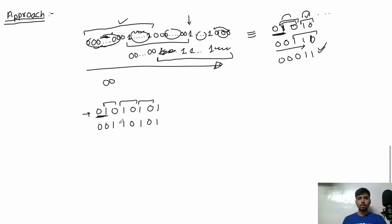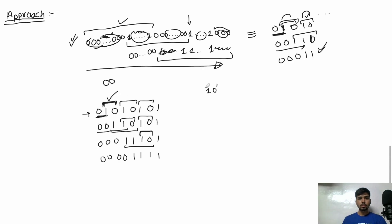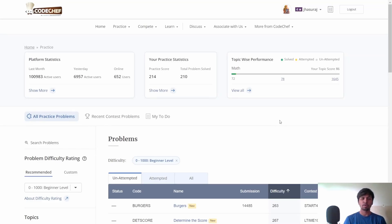Let's trace through: starting with '01010101', after reversing we get '00101011', then '000110 11', then '00001111' — sorted. Each reverse operation resolves exactly one '1,0' pair. So for any given binary string, we just need to count how many '10' pairs exist (where a '1' is immediately followed by a '0' in the run-length simplified string), and that count is our answer.